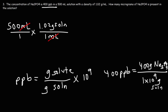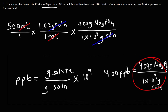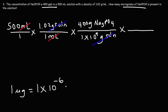Since we're doing unit conversion, we express 400 ppb as 400 grams of Na3PO4 on top, and 1 times 10 to the 9 grams of solution on the bottom. The grams of solution cancel. The last thing we need to do is convert grams of sodium phosphate to micrograms. The prefix micro is 10 to the minus 6, so 1 microgram equals 10 to the minus 6 grams. We put 10 to the minus 6 grams on the bottom and 1 microgram on top to cancel those units.